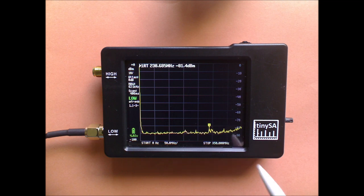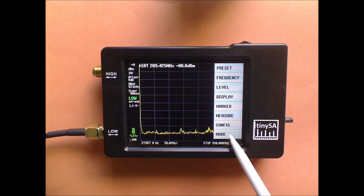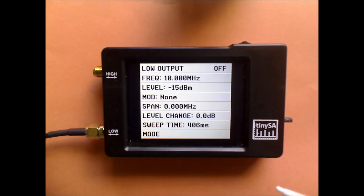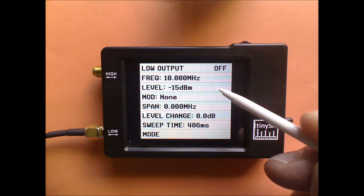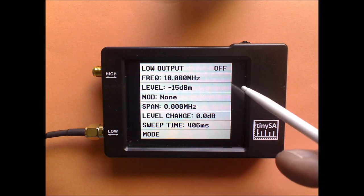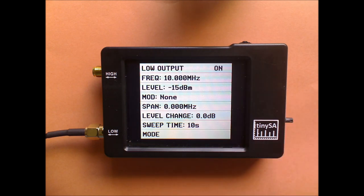We start by putting the TinySA in low output mode, the level is minus 15 dB, we have no modulation and we switch on the output.